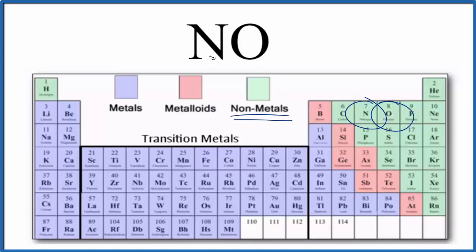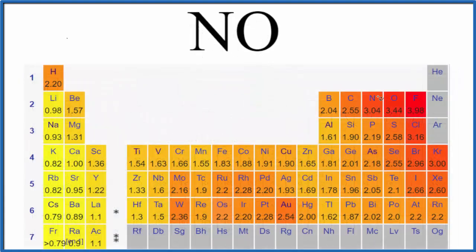But let's look at the difference in electronegativity between N and O to see if that's the case. So here's nitrogen, 3.04. Oxygen, right next door, 3.44. So that's a difference of 0.40. That's our electronegativity difference between the nitrogen and the oxygen.